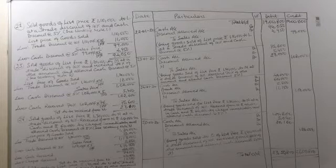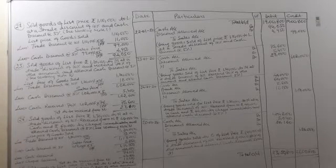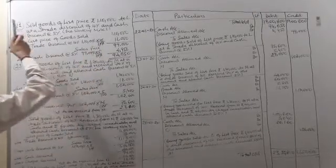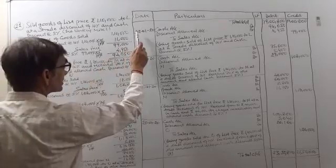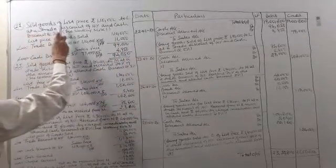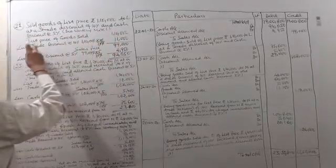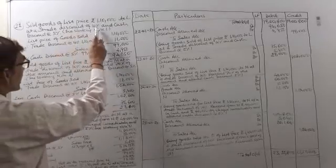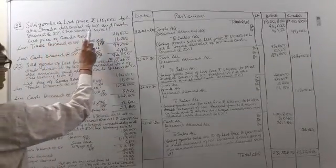To continue with our transactions related to sales and the general entry, the 22nd transaction: on 22nd January 2020, goods of list price rupees 1,10,000 were sold to L at a trade discount of 10% and cash discount at the rate 5%. See working note 1.